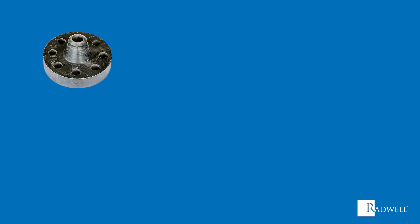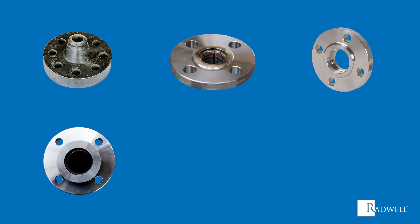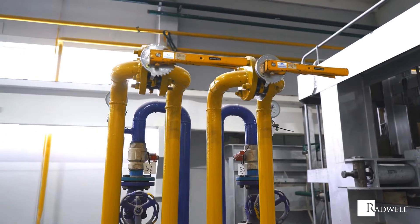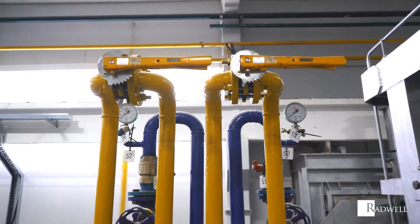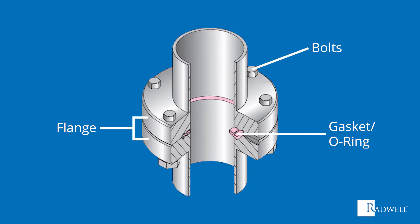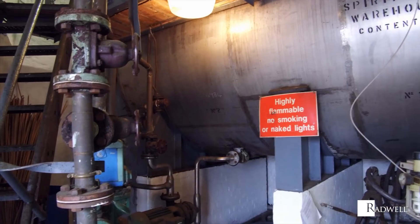Types of flanges include weld neck, slip-on, socket weld, lap joint, threaded, and blind. Though there are multiple types of flanges, each consists of three main components: first, the flanges themselves, which will be placed onto pipes; then a gasket or o-ring placed in between the flanges to provide a tighter and more efficient seal; and lastly, bolts or clamps which provide the connection between the two flanges.